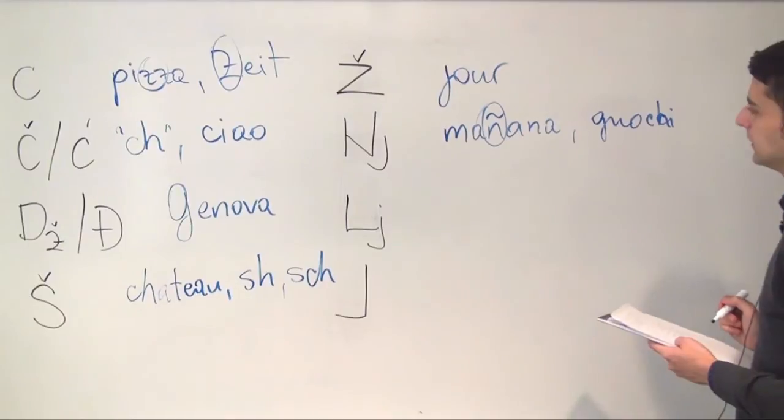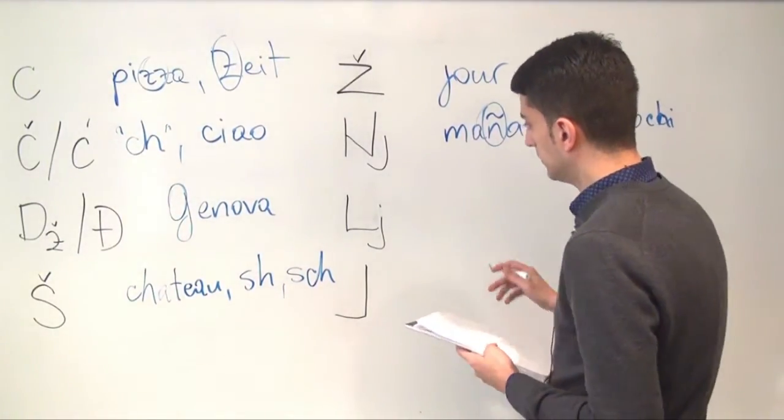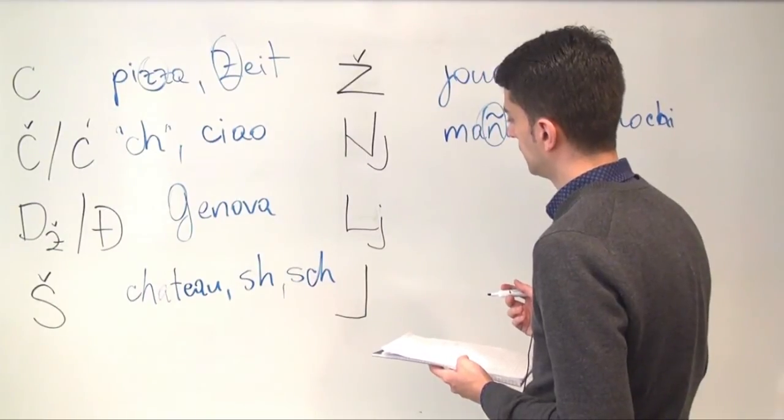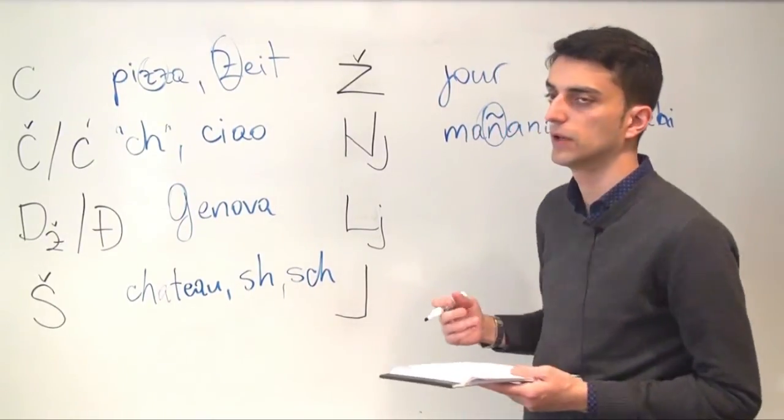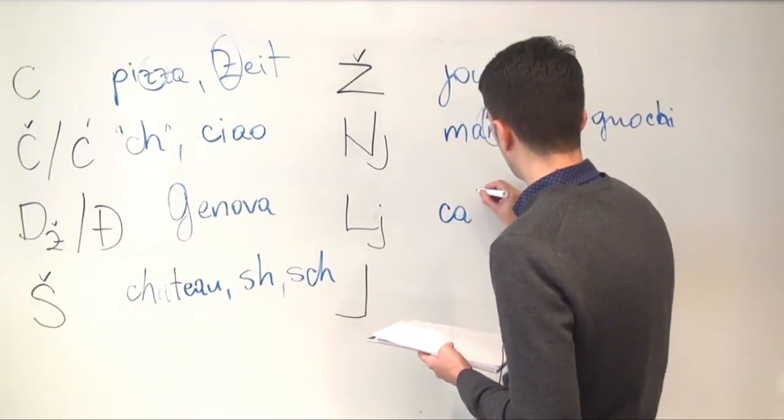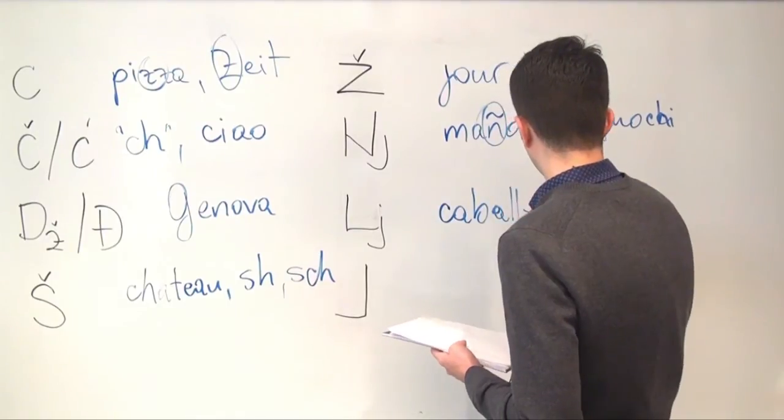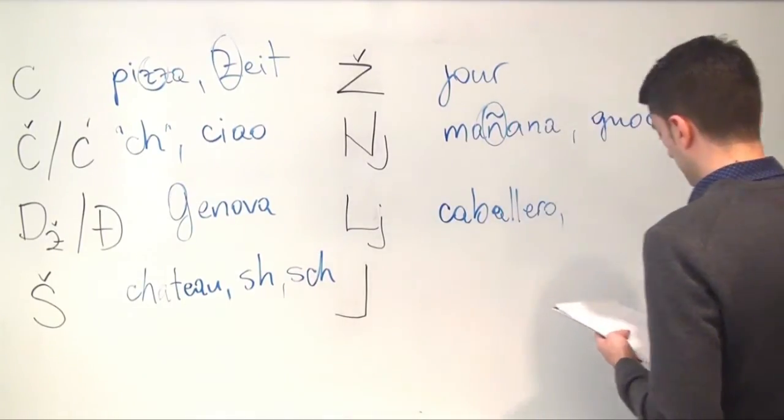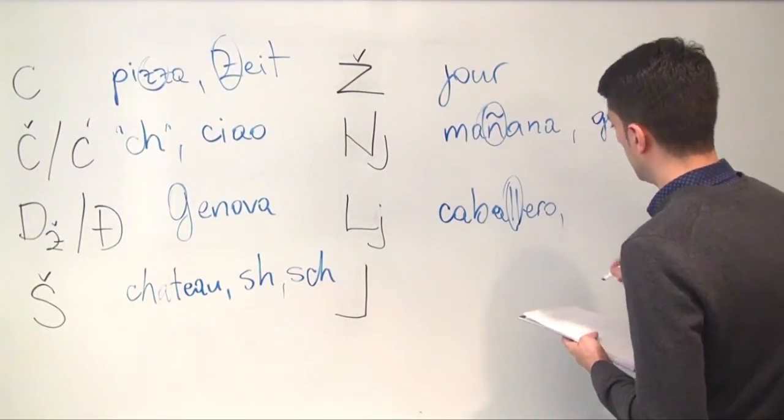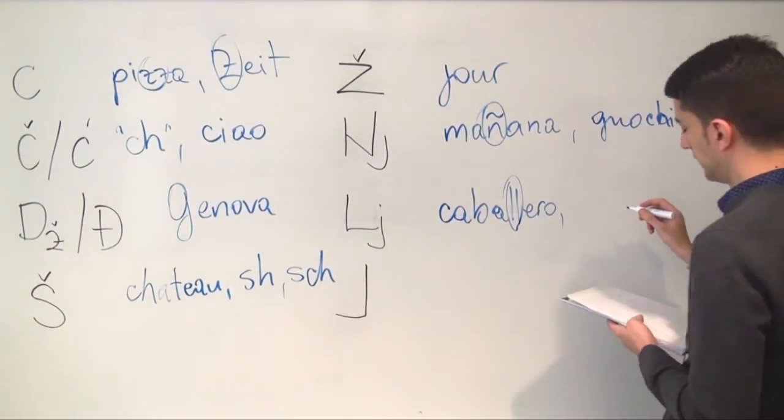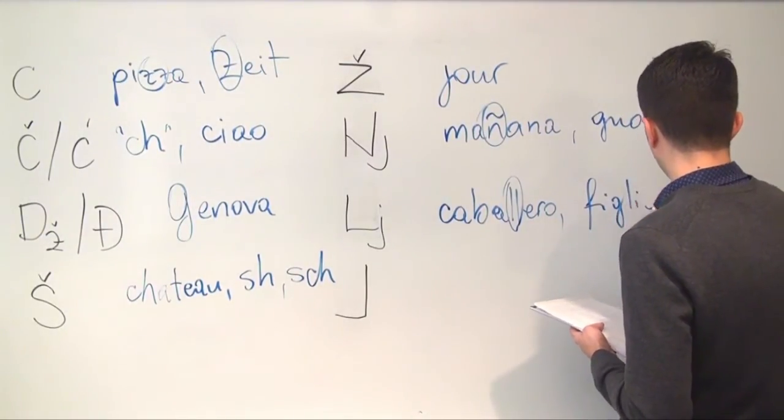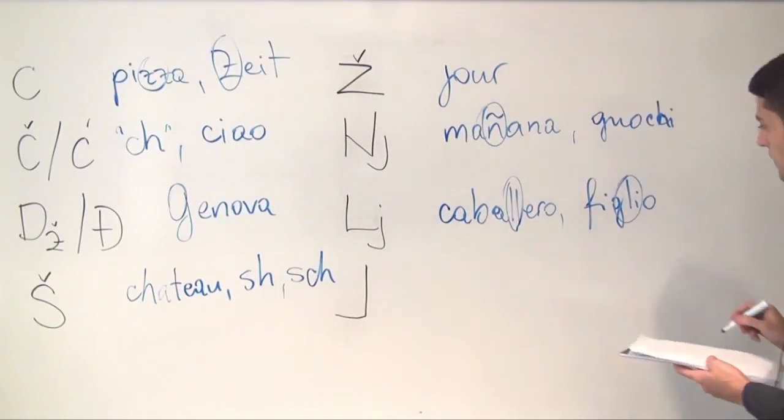Lj is also a sound that's specific to BCS, but there are examples in other languages. So in Spanish you can hear in the word caballero. And in Italian, so in Spanish it's double L, caballero. And in Italian you can hear it in the word figlio. And it's this combination of letters.